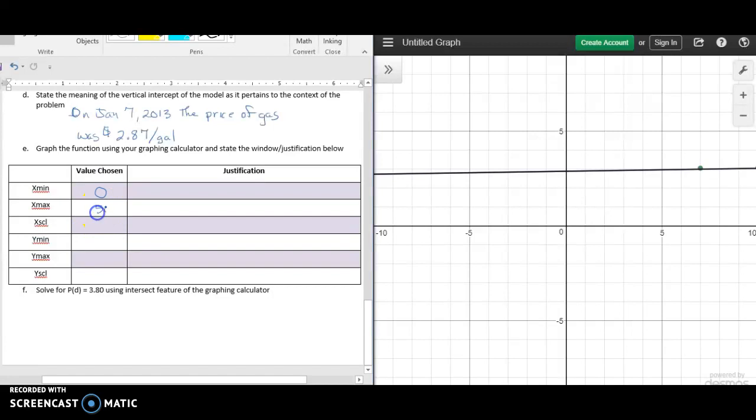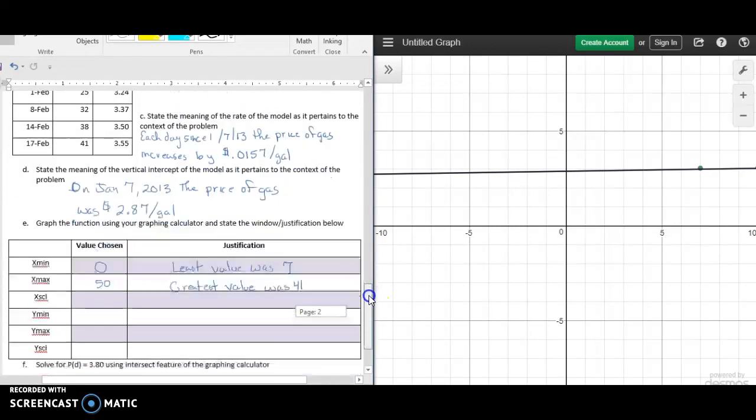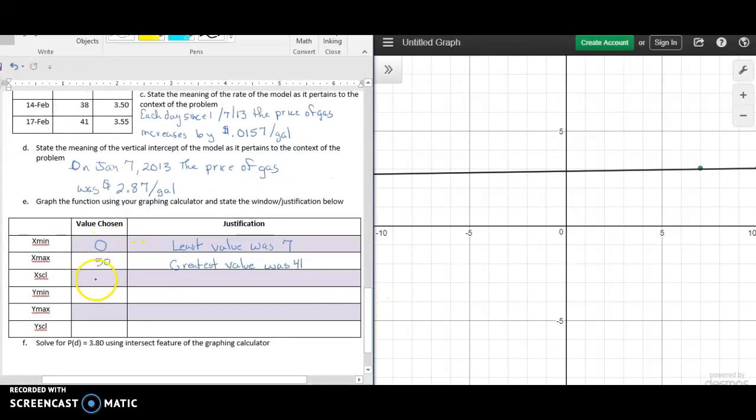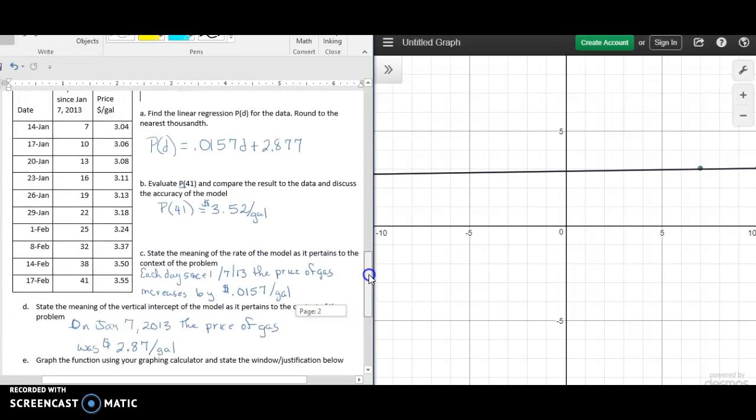We want to go from 0 to 50. Our least value was 7, and our greatest value was 41, and we just want to capture those values. How would we count those? We'd probably count by 5s.